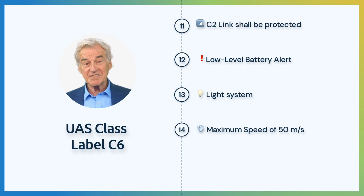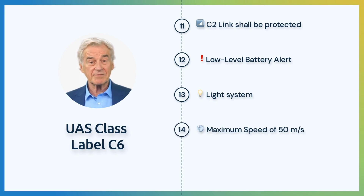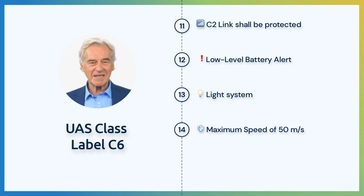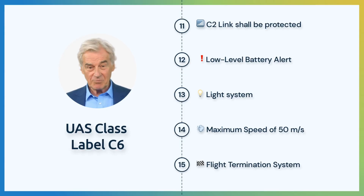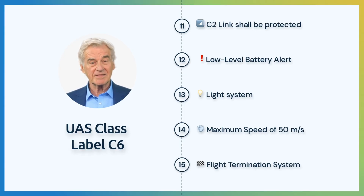The maximum speed in level flight shall be limited to 50 meters per second or 180 kilometers per hour. It is important that the UA shall be equipped with an independent FTS that provides the ability to end the flight in a controlled manner.